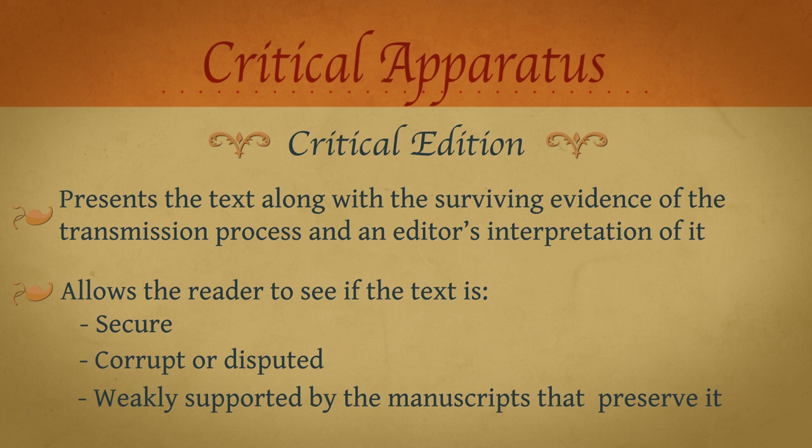No classical text can be read responsibly without one. But our existing digital libraries of classical texts routinely strip out the evidence of and arguments about the transmission process and present only the text. They do so by the simple expedient of omitting the critical apparatus.